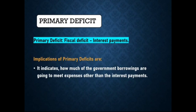Primary deficit refers to fiscal deficit minus interest payment. The implication of primary deficit is it indicates how much of the government borrowings are going to meet expenses other than the interest payment. This was all about the measures of government deficit.